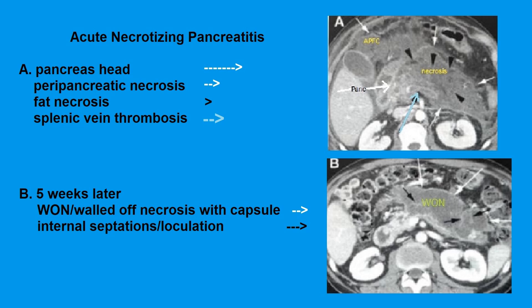These two slides show a nasty case of necrotizing pancreatitis. In image A, we see areas of fat marked by black arrows and incidental splenic vein thrombosis annotated by the pale blue arrow. The acute peripancreatic fluid collections are fairly homogeneous with no wall. Later on, this patient's collections progressed to walled-off necrosis — which can be intraparenchymal or peripancreatic — with heterogeneous contents, septations, and a discrete wall.